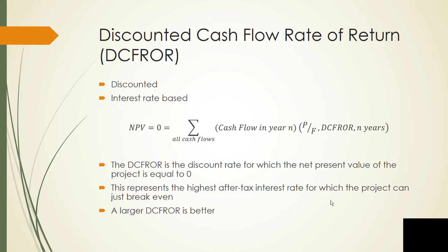So you sum up all of the cash flows for each year and then multiply those times the formula for converting from future values to present values. And you're going to modify the interest rate, and you do this until you find the highest after-tax interest rate for which the project just breaks even. As with the non-discounted techniques, we want the largest rate of return possible for our projects.